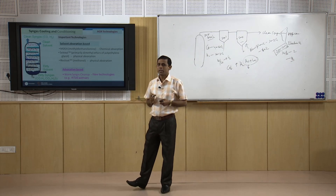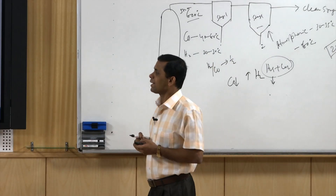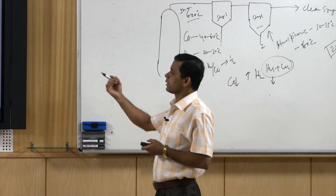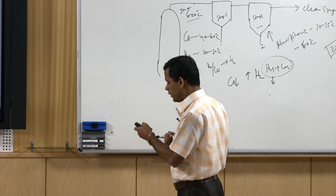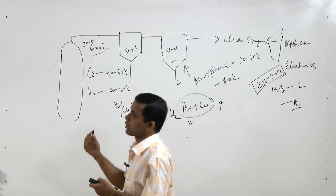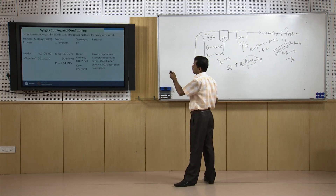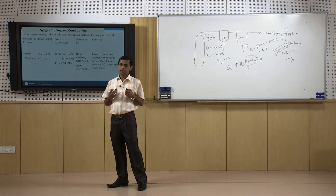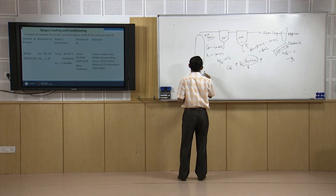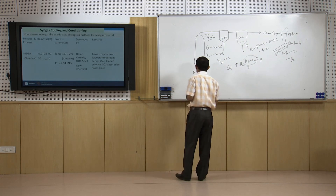Due to this difference, the temperature for the MDEA process is around atmospheric temperature, whereas for Selexol and Rectisol the temperature is below 0 degrees centigrade. Obviously the cost is higher for Rectisol and Selexol, but they offer more selectivity and higher efficiency for separation. Now we will compare these three acid gas removal methods: MDEA, Selexol, and Rectisol.